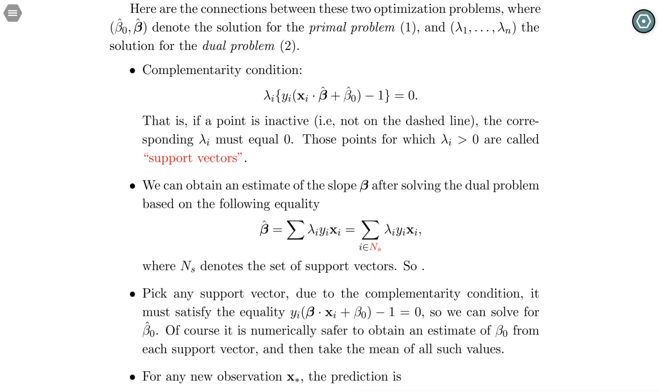In particular, you're going to find that beta, the slope, is equal to the following sum. But instead of doing the sum over n samples, we actually only need to do this sum over just the support vectors, because for non-support vectors, the lambda_i is going to be zero anyway.